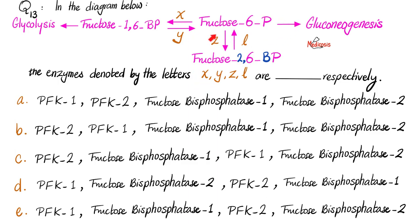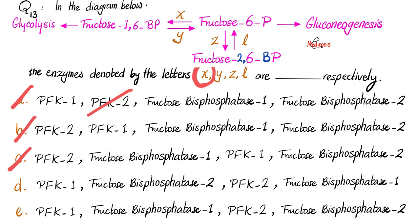Enzyme X converts fructose-6-phosphate to fructose-1,6-bisphosphate — it adds a phosphate at carbon number 1, so it's PFK1. Enzyme Y removes a phosphate at carbon number 1, making it fructose-bisphosphatase 1. This rules out options A, B, C, and D, leaving E. Enzyme Z is PFK2 — phosphofructokinase 2, adding a phosphate at carbon 2, converting fructose-6-phosphate into fructose-2,6-bisphosphate. The last enzyme L is fructose-bisphosphatase 2, converting fructose-2,6-bisphosphate back into fructose-6-phosphate.